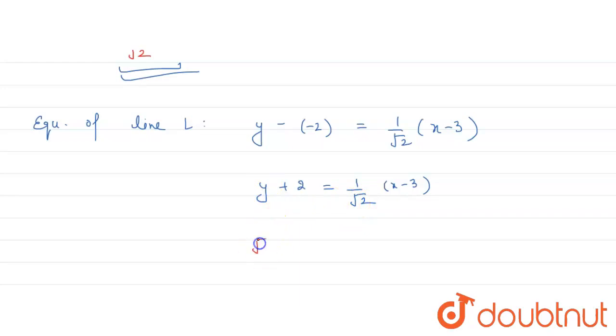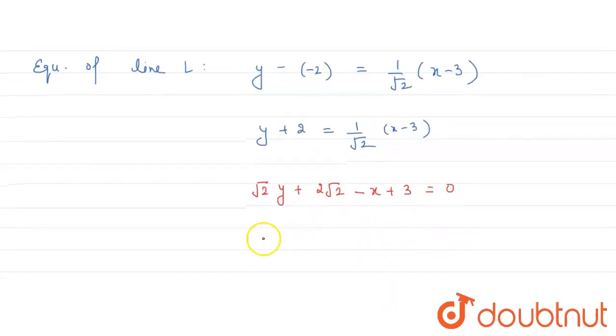Simplify further. Square root of 2 y plus 2 root 2 minus x plus 3 equals 0. So we can say square root of 2 y minus x plus 2 root 2 plus 3 equals 0. This is the required equation of the line.